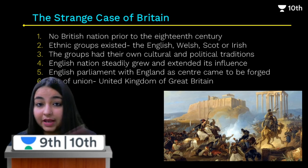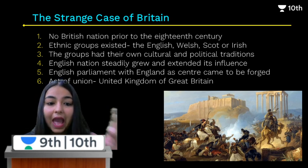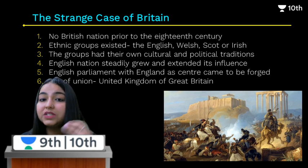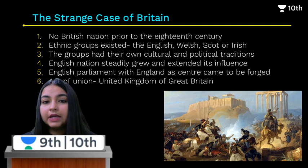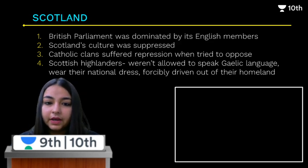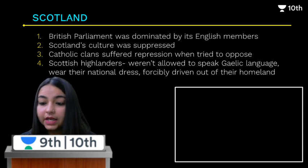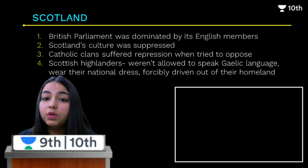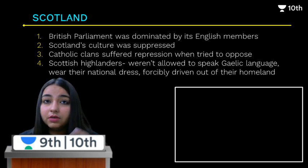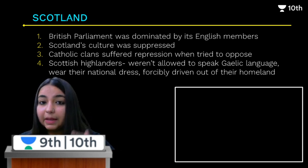Let's understand how this happened step by step. The Act of Union took place in 1707 between England and Scotland, and as a result, England was able to extend its influence over Scotland. Within the British Parliament, there were many English people, so when they ruled over Scotland, Scotland's own culture, political institutions, and traditions were gradually suppressed. The Catholic clans living in the Scottish Highlands faced severe control by the English — they were not allowed to speak their Gaelic language or wear their national dress, and many were forcibly removed from their homeland.